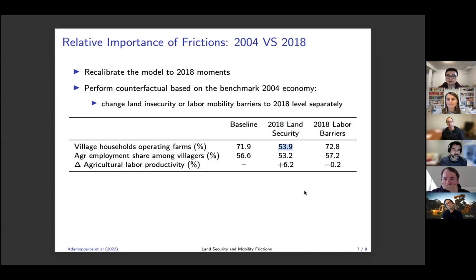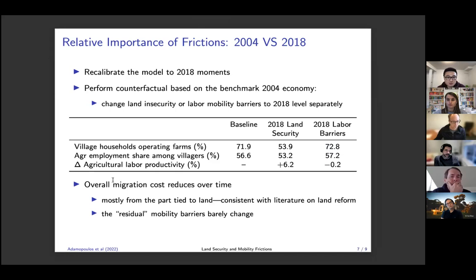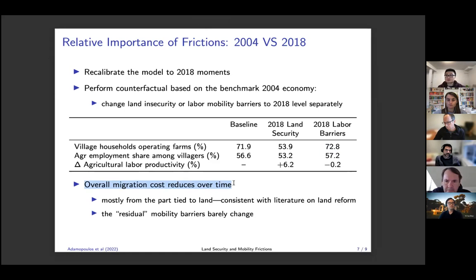But in the 2004 economy, if you move the labor mobility barrier parameters to the 2018 level, more households actually operate farms and agricultural productivity goes down. So while the overall migration cost has been reducing in China over time, once you do the decomposition, the reduction is largely from the part tied to land — consistent with the literature on land certification reform — while the residual migration cost from the labor market may actually have increased over time.